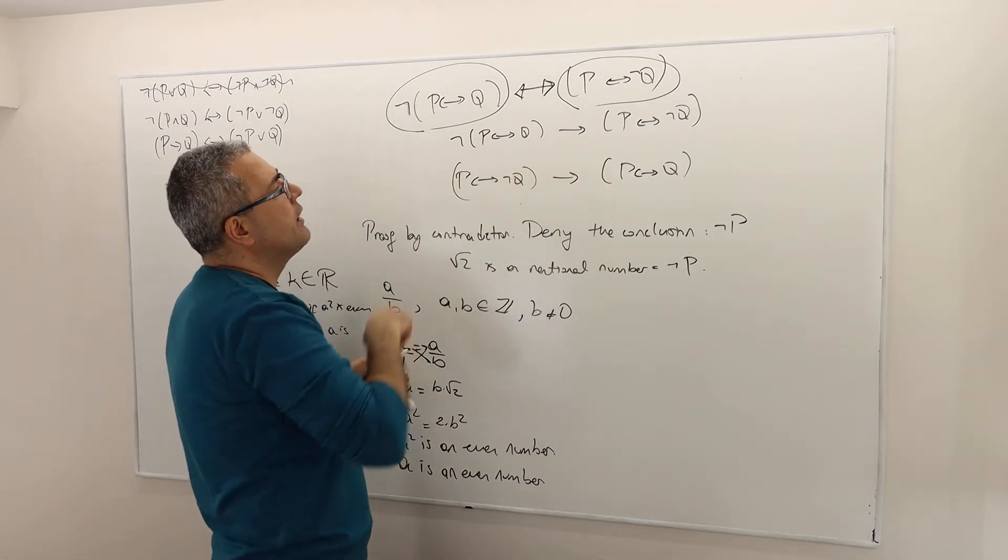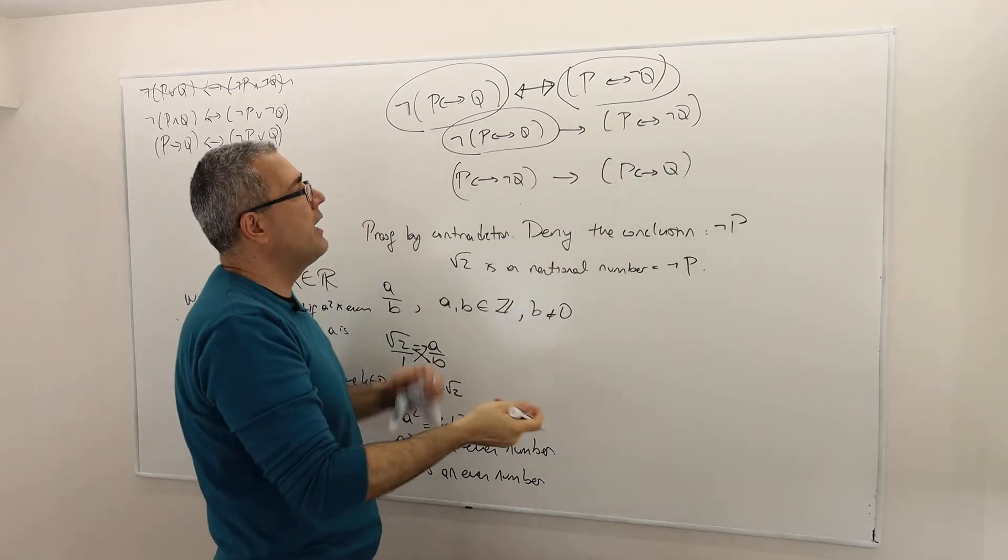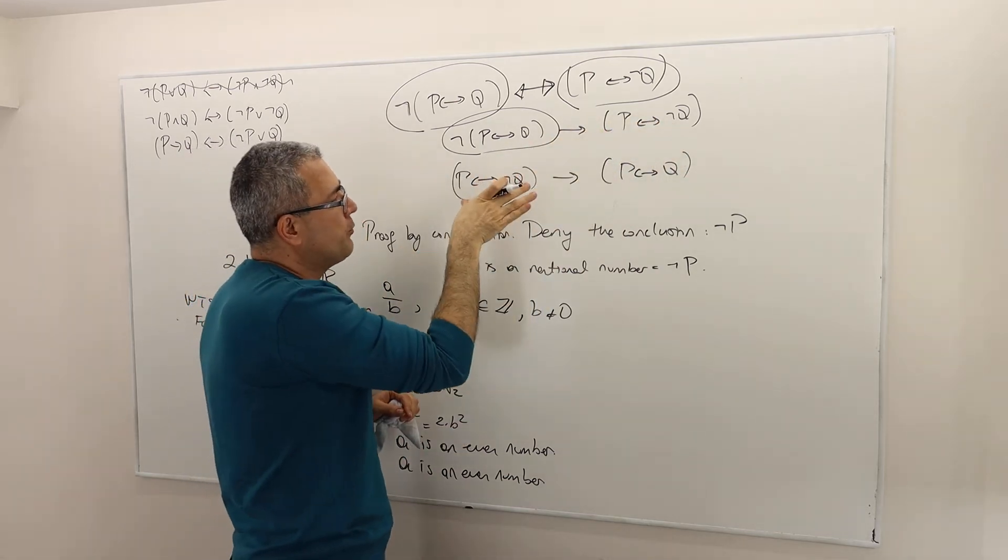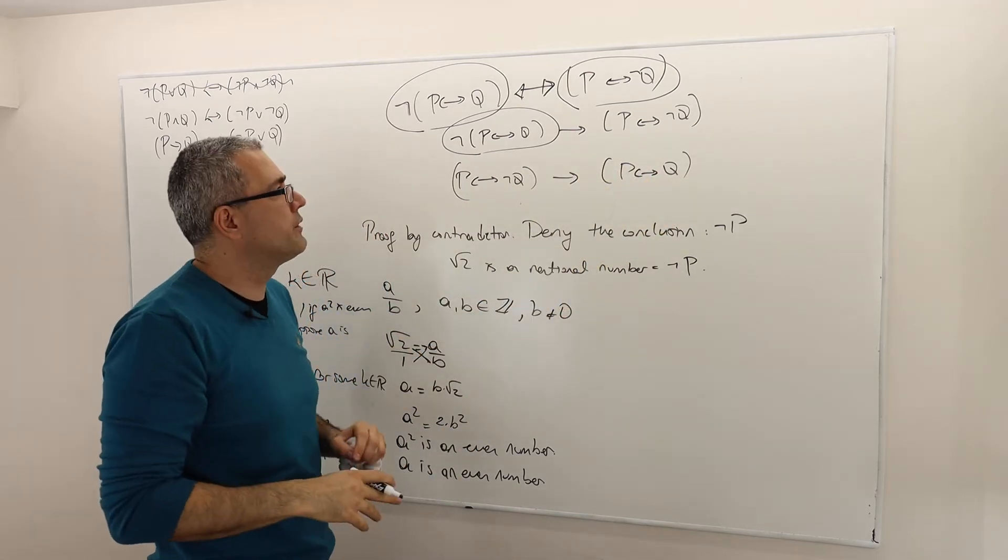So the first part, you have to assume this and then show this. In the second part, you have to assume this and then show this. All right? That's what you are supposed to do.